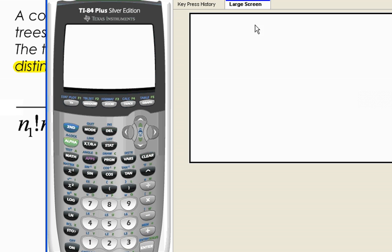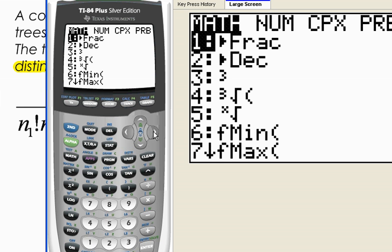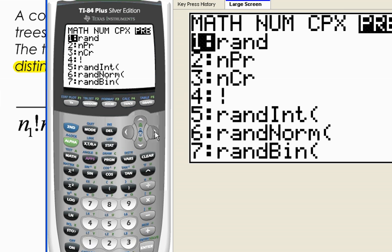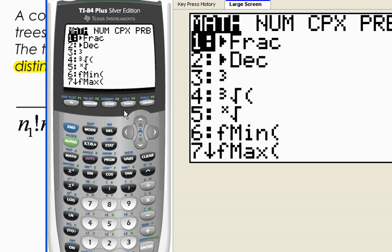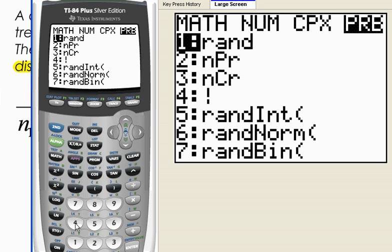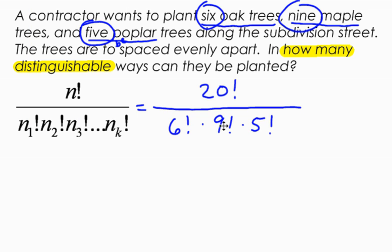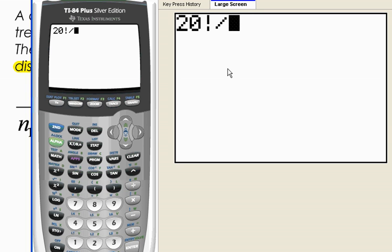On our calculator, we can find factorials. I want to take 20 factorial. You go math, then to probability, and look at number 4. So you go to your math menu, then arrow over to the menu where it says probability, and you want number 4. There it is, 20 factorial. And we're going to divide that by our other three, 6 factorial, 9 factorial, 5 factorial.